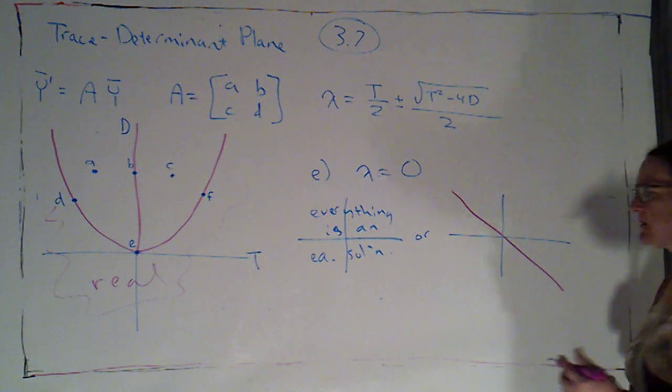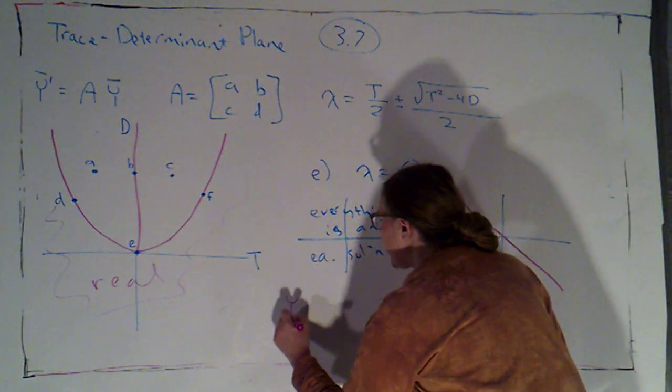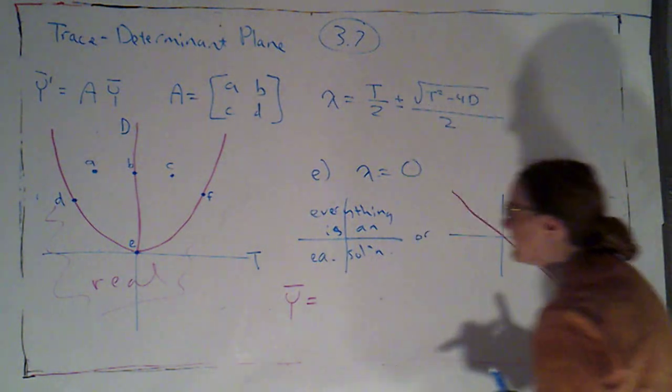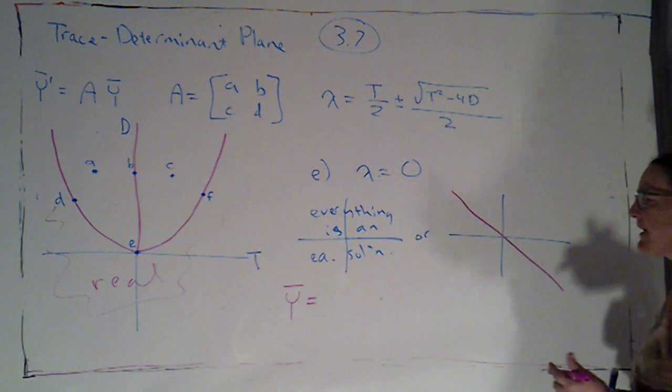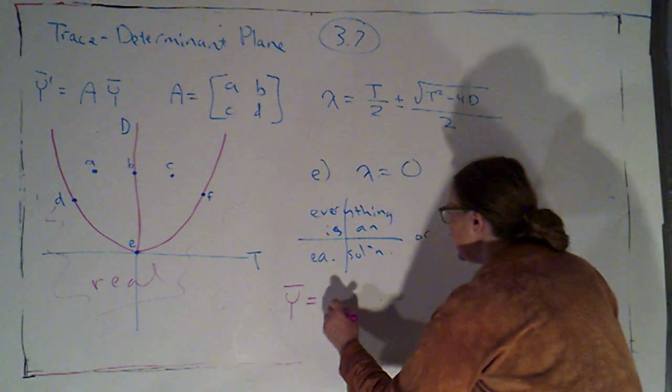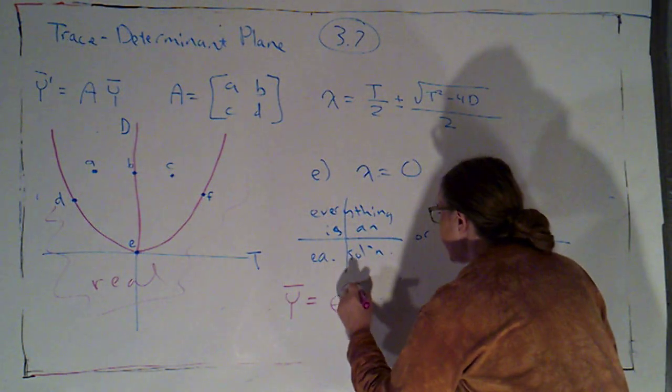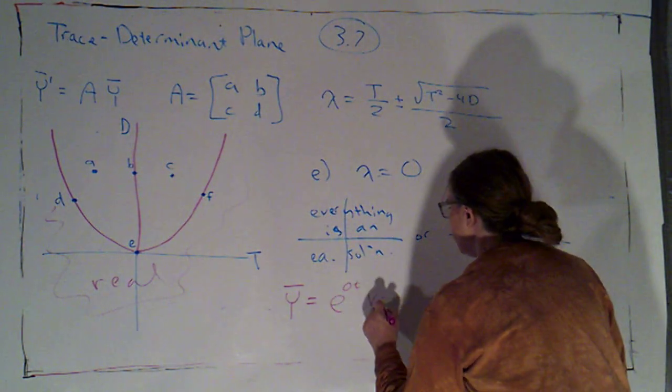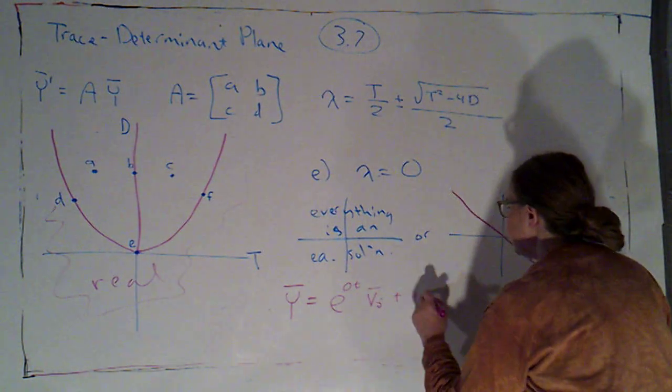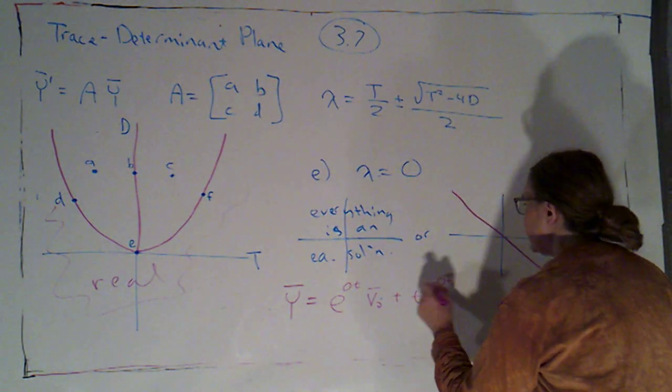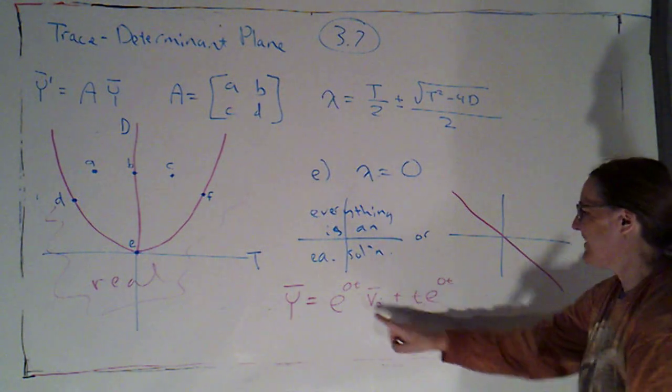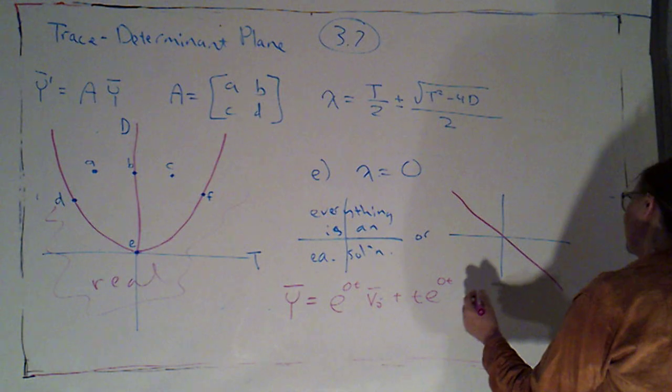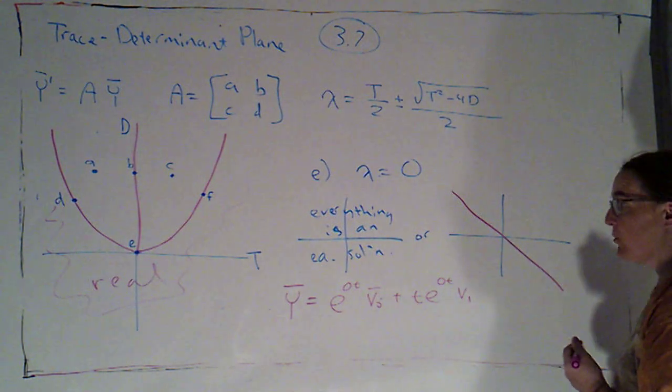So, let's explore just a little bit. I know that when I have a repeated eigenvalue but only one independent eigenvector, my general solution is e to that eigenvalue times t times v0 plus t e to that eigenvalue times t times v1.